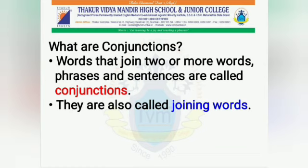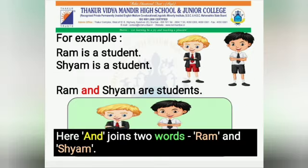What are conjunctions? Words that join two or more words, phrases and sentences are called conjunctions. They are also called joining words. For example, Ram is a student. Shyam is a student.